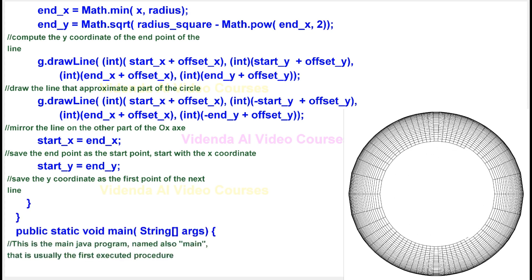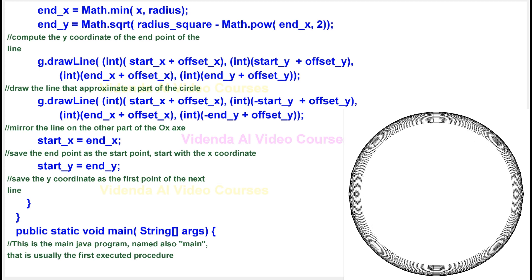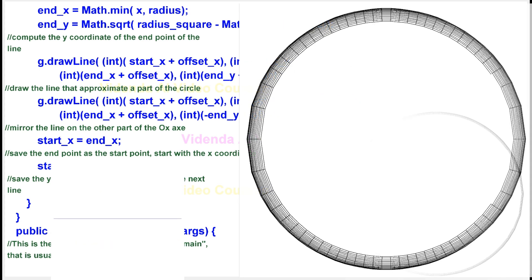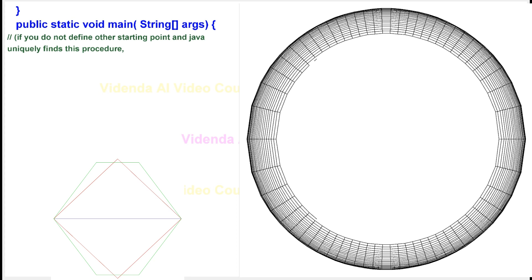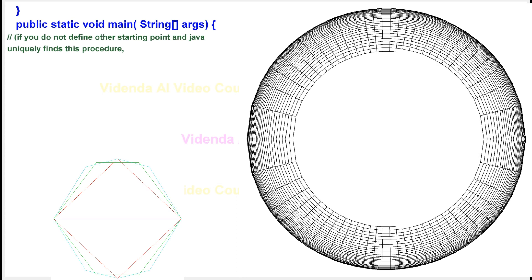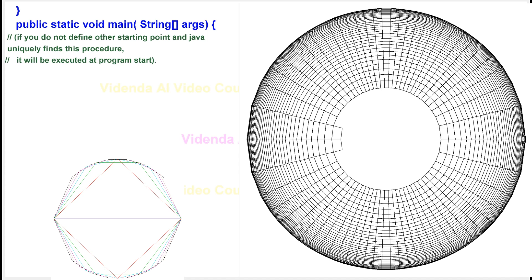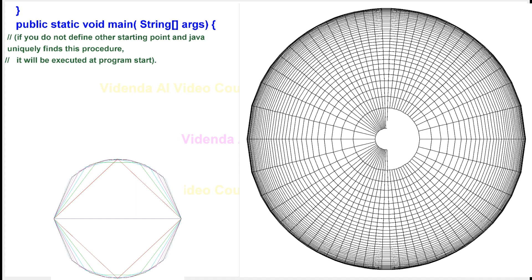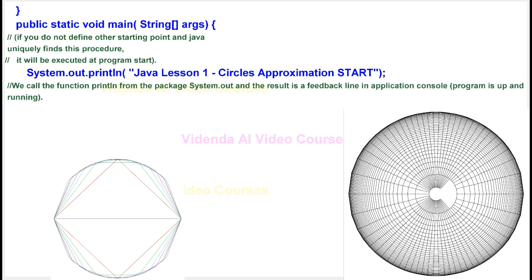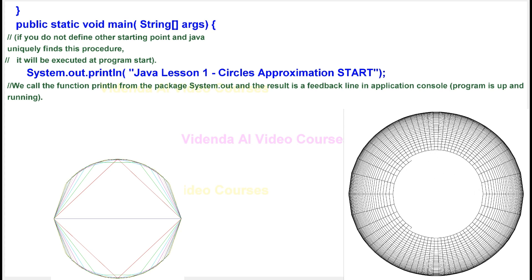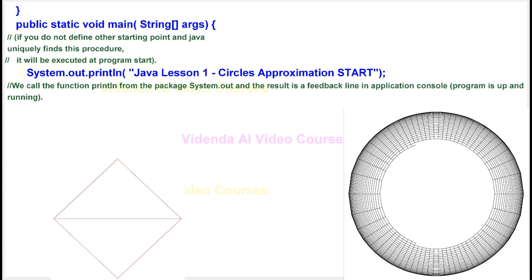This is the main Java program, named also main, that is usually the first executed procedure. If you do not define other starting point and Java uniquely finds this procedure, it will be executed at program start. We call the function printLane from the package system.out and the result is a feedback line in application console, program is up and running.